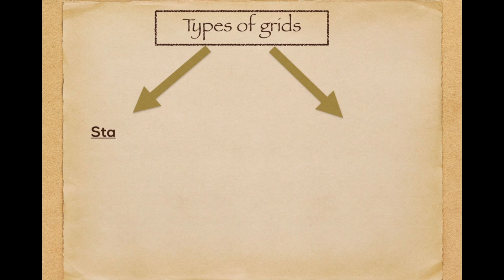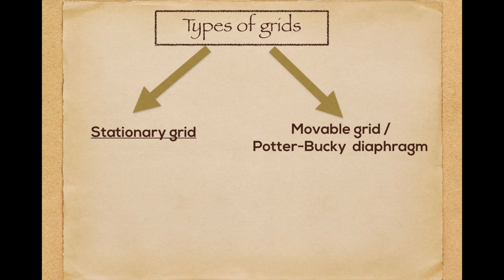Now let's discuss the types. There are mainly two types of grids: stationary and movable grid or Potter-Bucky diaphragm.